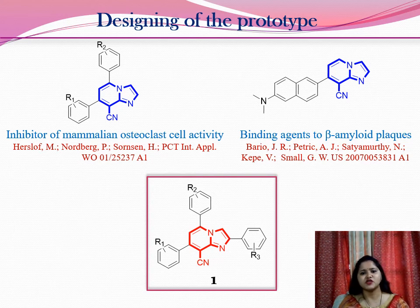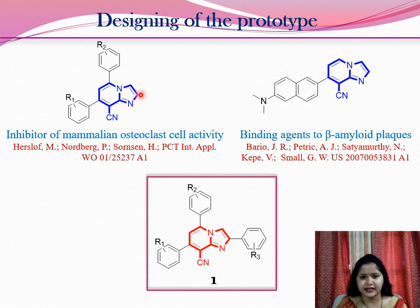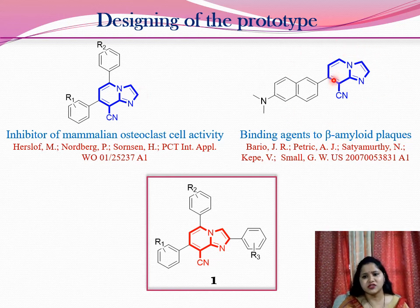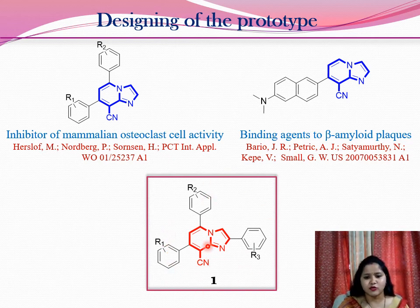From the imidazole moiety, cyano substitution at position 8 shows a few important biological activities: these compounds act as inhibitors of mammalian osteoclast cell activity, and they are also binding agents to beta-amyloid plaques, which we know are relevant to the treatment of Alzheimer's disease. With this concept in mind, we contemplated the synthesis of this particular moiety having an imidazole nucleus with a cyano group at position 8.